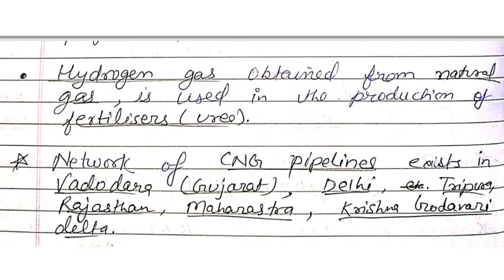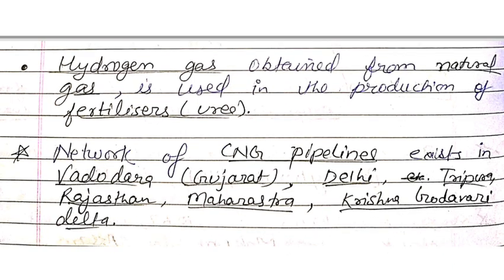A network of CNG pipelines exists in Vadodara, Gujarat, Delhi, Tripura, Rajasthan, Maharashtra, and the Krishna-Godavari Delta region.